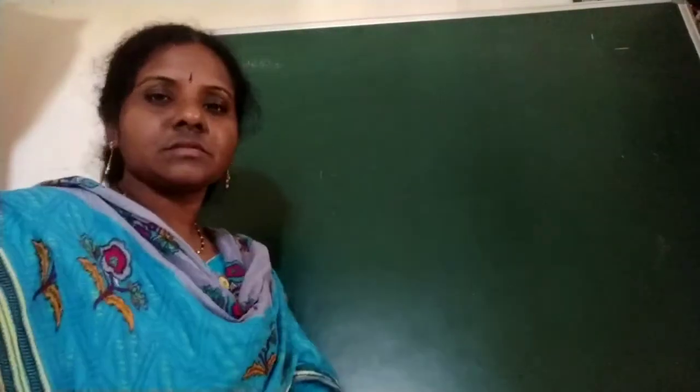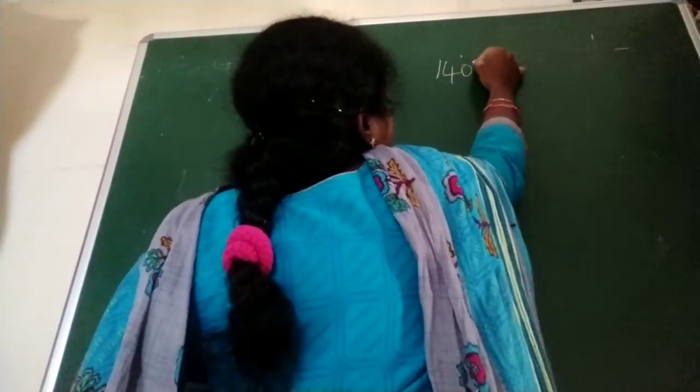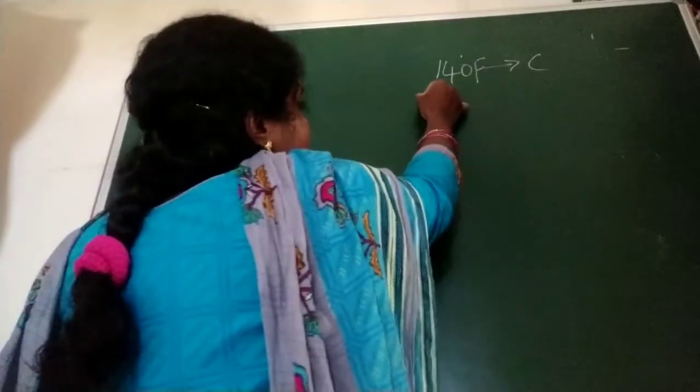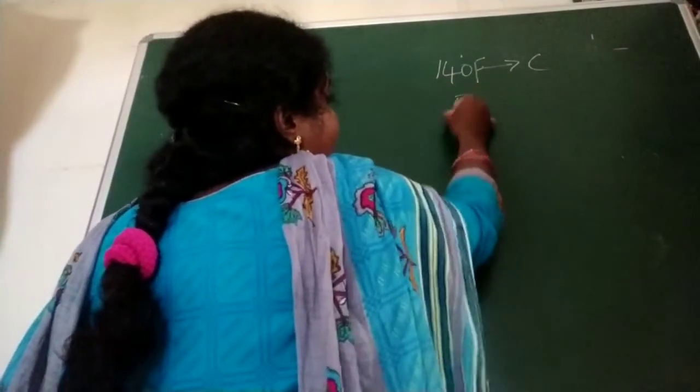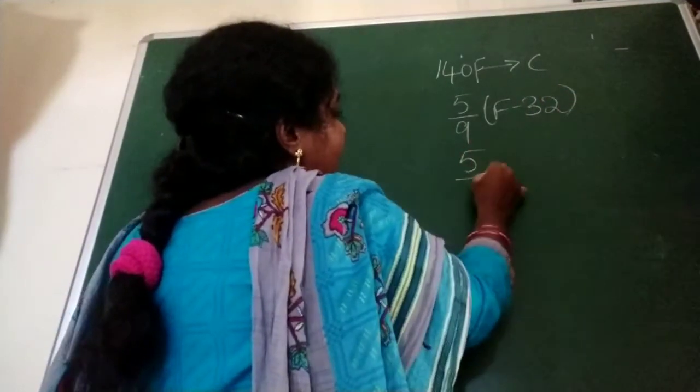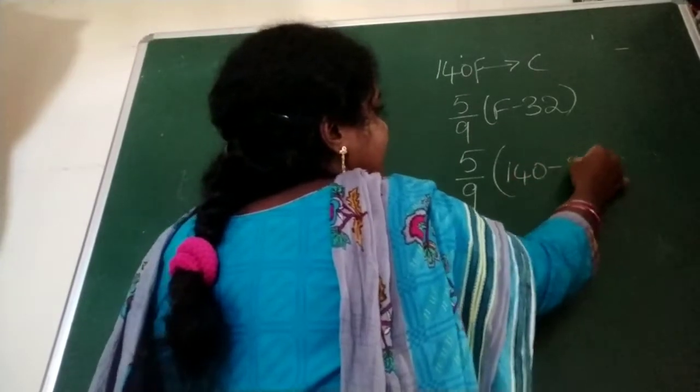One more sum we will discuss. Convert 140 degrees Fahrenheit into the Celsius scale. Formula is 5 by 9 into F minus 32. So 5 by 9, F how much here they given? 140 minus 32.